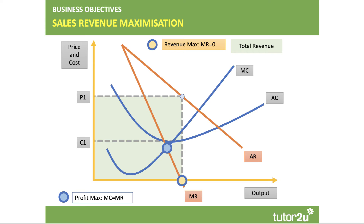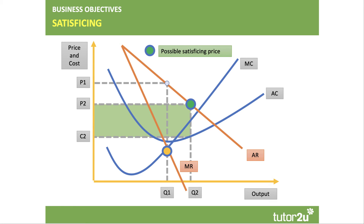Not every firm aims to maximise profit — they may have alternative objectives. The sales revenue maximisation point is where marginal revenue equals zero. You take the price up to the price line and maximise revenue, shown by the green area, but there's lower profit because of cost. Some firms go for a satisficing output, somewhere between profit maximisation and normal profit, perhaps seeking more market share or because managers prefer revenue-based bonuses. Satisficing normally involves a lower price and higher output, but a lower level of profit.